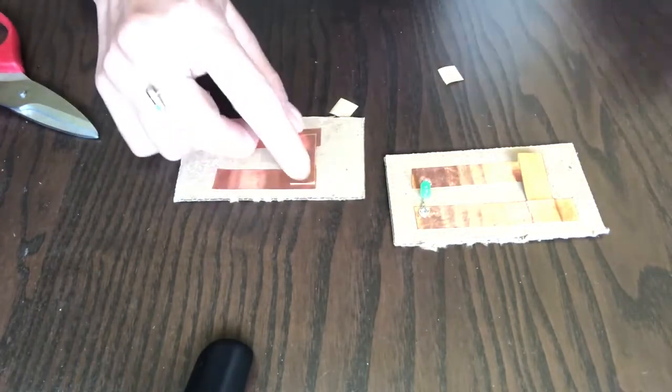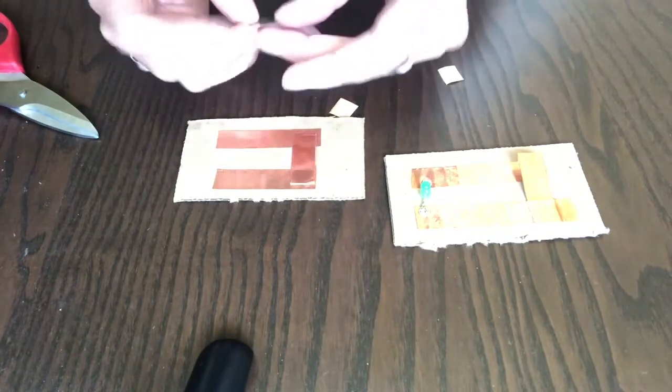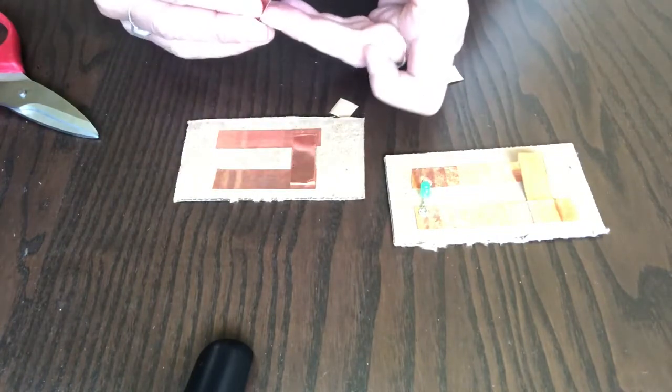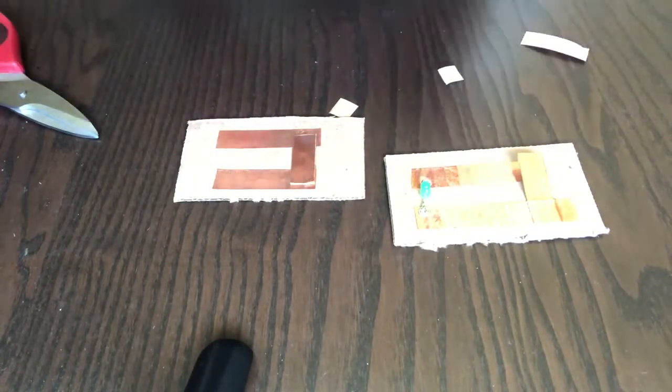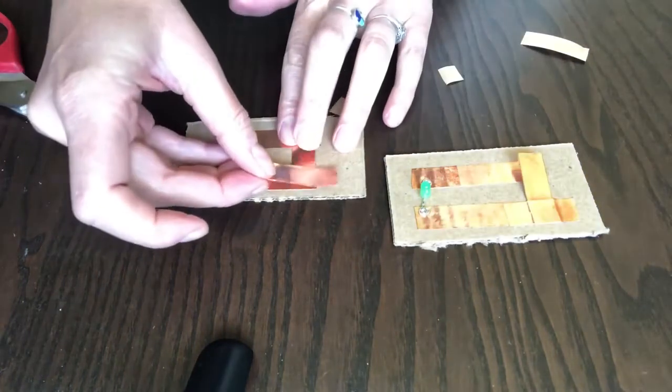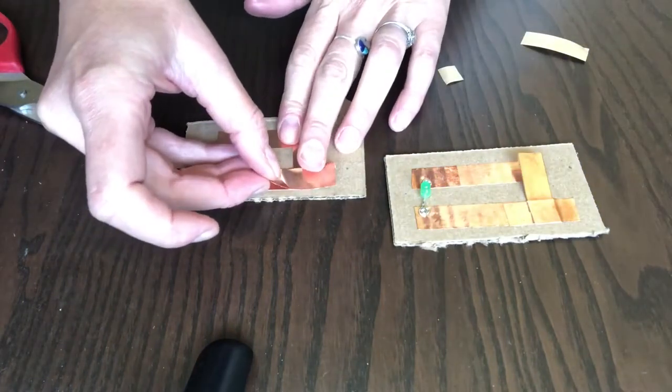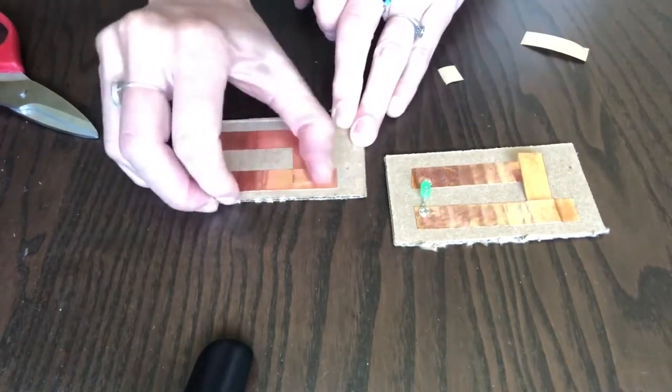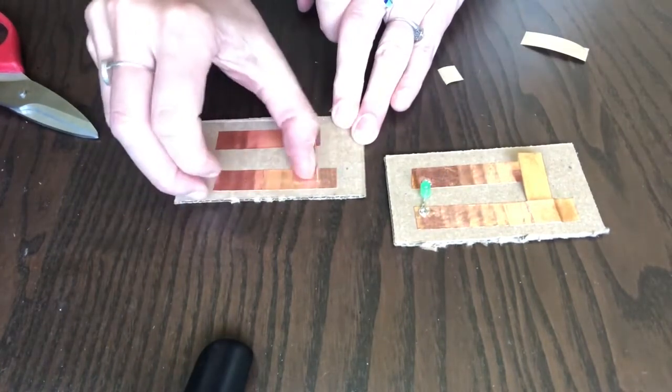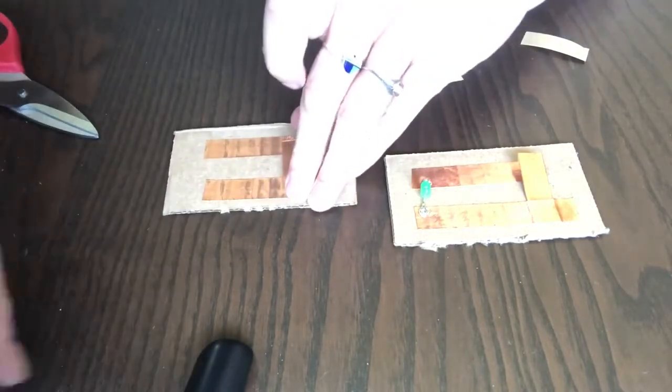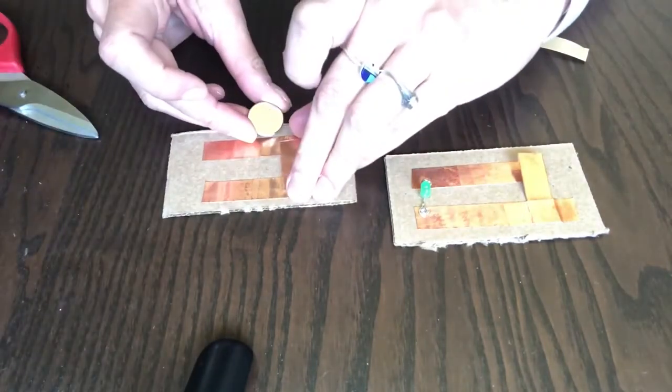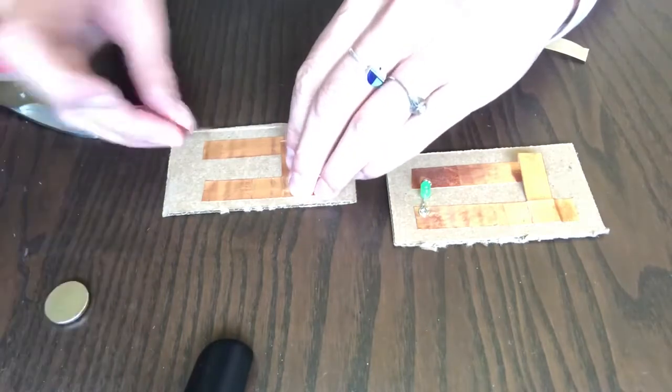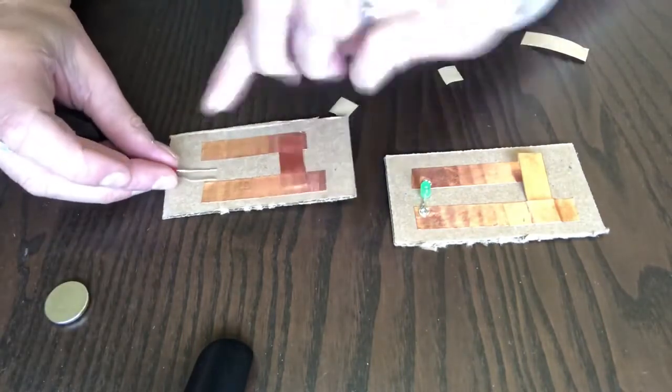Now we're going to tape this down with our last little piece. And this won't end up conducting electricity very much. It's just to keep that switch in place. This will be both a switch and the connector to the battery. The last thing we're going to do is get this ready to solder.